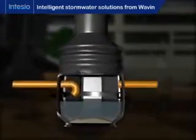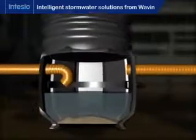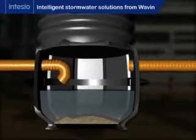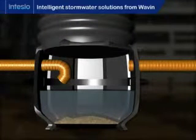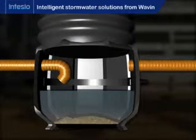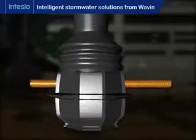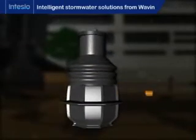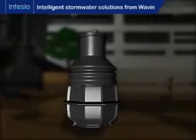Firstly, water enters the sand and sludge separator. Here, sand, grit and other solids simply drop from the standing water to the bottom of the separator.